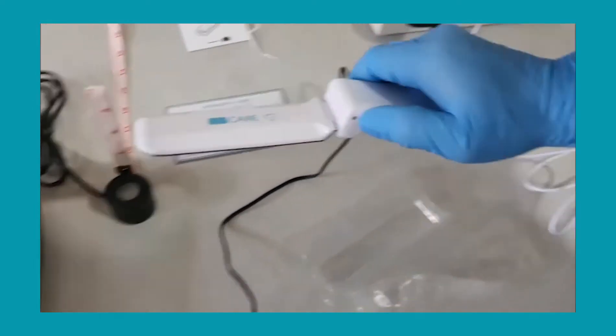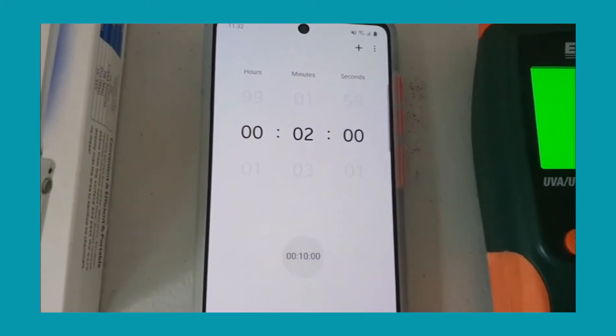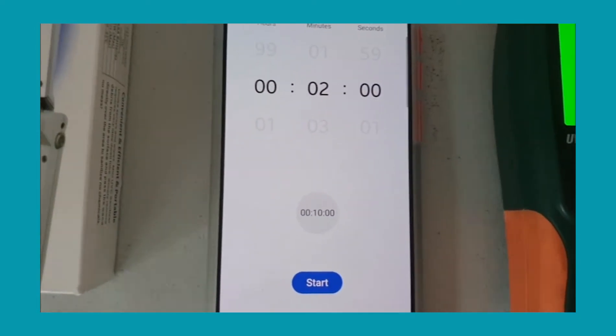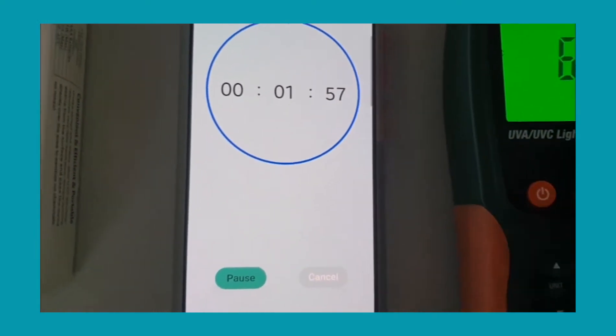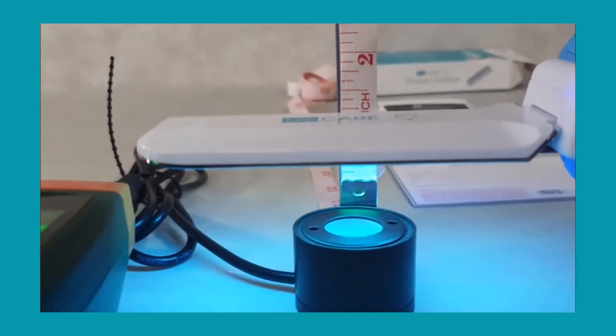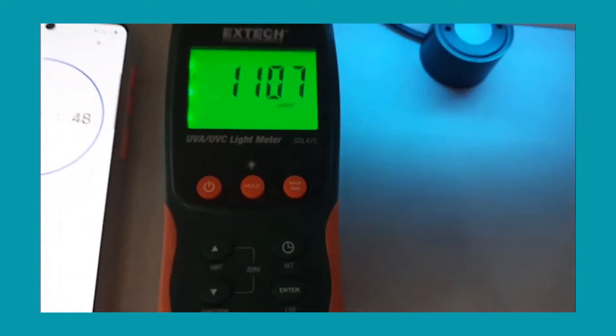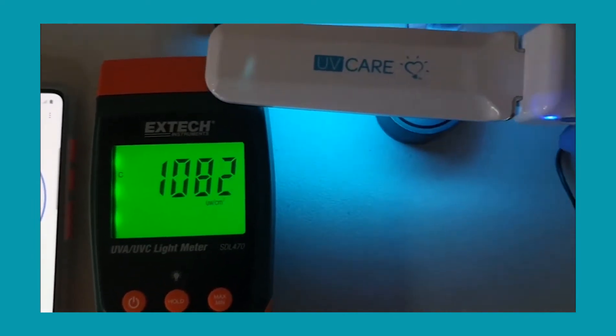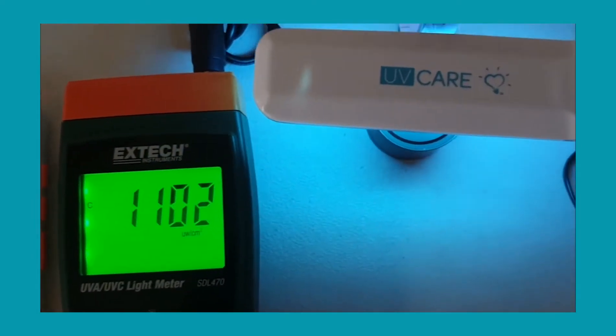We're turning on the UV Care pocket sterilizer and setting the timer to two minutes so that we will be able to read the microwatt that is being emitted.